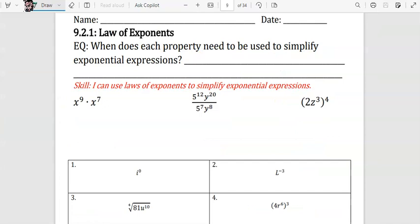So for this first one, x to the 9th times x to the 7th, we'll use the product rule. So that would be x to the 9th plus 7, that equals x to the 16th power.